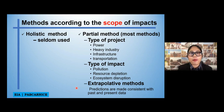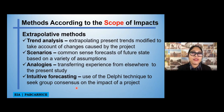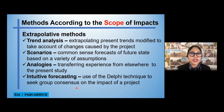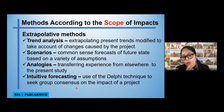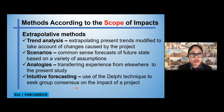When we say extrapolative methods, these are predictions that are consistent with past and present data. We have a few types of extrapolative methods. We have trend analysis, which involves extrapolating present trends modified to take account of changes caused by the project. We also have scenarios, which are common-sense forecasts of future state based on a variety of assumptions — for example, scenario one with its assumptions and possible impacts, and scenario two with its possible impacts.